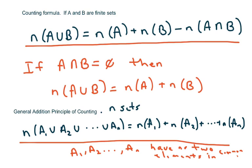So this is our basic formula. If A and B are finite sets, then the number of elements of A union with B is the number of A plus the number of B minus the intersection, because you count that twice.